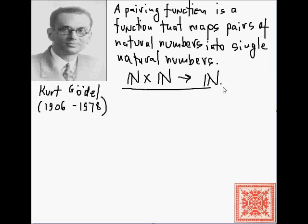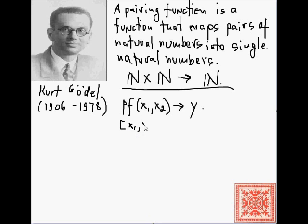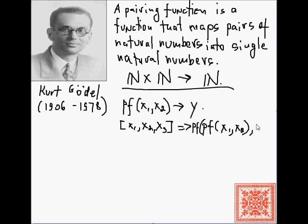Here's what the pairing function allows us to do. Let's say we have some pairing function PF that maps two natural numbers into one. Then we can map sequences of natural numbers: for a sequence x1, x2, x3 of three natural numbers, we apply our pairing function to two natural numbers and then apply it to the output of the first application and x3, so that the sequence of three numbers is mapped into one.